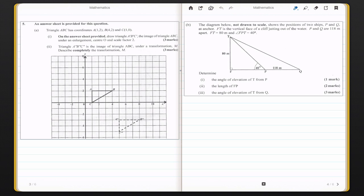The question says, Triangle ABC has coordinates A which is 1, 2, B which is 4, 2, and C which is 1, 0. On the answer sheet provided, draw Triangle A'B'C', the image of Triangle ABC under an enlargement, center O, and scale factor of 2.